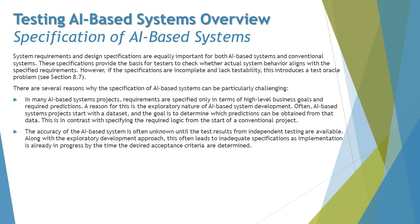Challenge number one: in many AI-based system projects, requirements are specified only in terms of high-level business goals and required predictions. The reason is the exploratory nature of AI-based system development — often these projects start with a dataset, and the goal is to determine which predictions can be obtained from that data. This contrasts with specifying required logic from the start of a conventional project. People are not exactly sure how the AI-based system will actually behave; we have a very high-level outline but not very specific requirements.